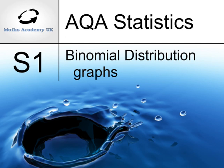In this video, we'll have a look at the binomial distribution from a graphical perspective. The binomial distribution is defined by the number of trials, n, and the probability of success, p, in one of those trials.